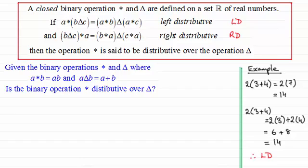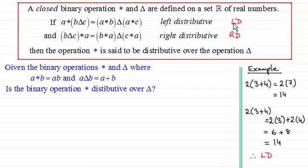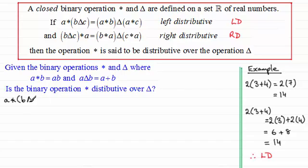Now I want to show you how to prove something like this algebraically. Given the binary operation star and triangle where a star b equals ab (the product) and a triangle b equals a plus b, the question is: is the binary operation star distributive over triangle? To prove this I need to first show it's left distributive, then right distributive. I'll take the left-hand side and right-hand side separately and check they agree.